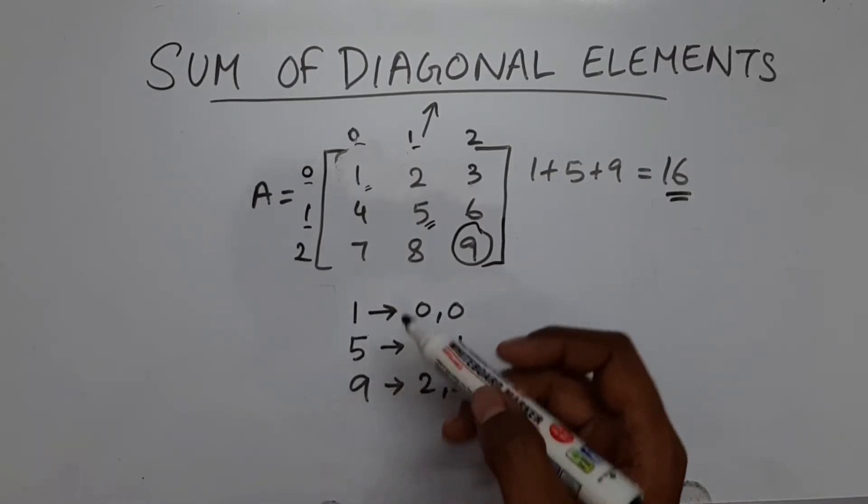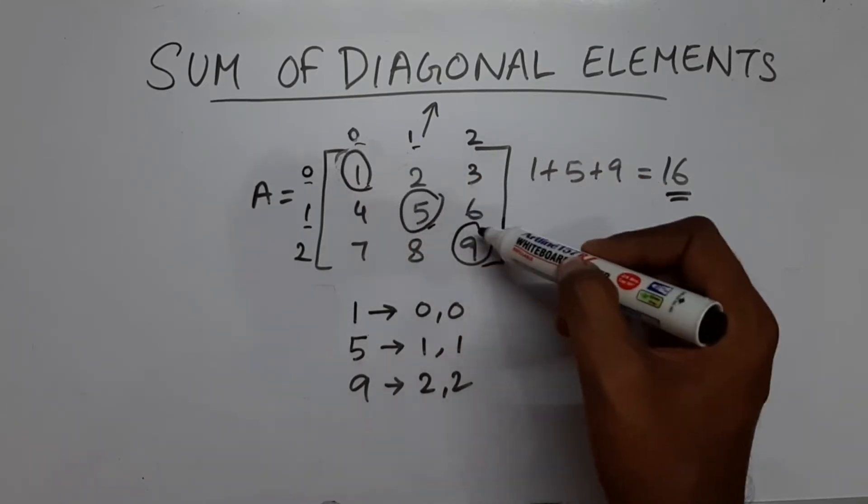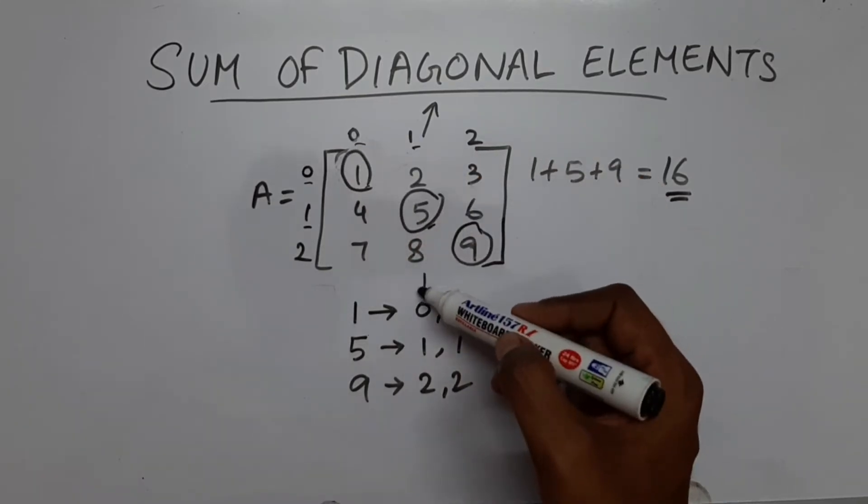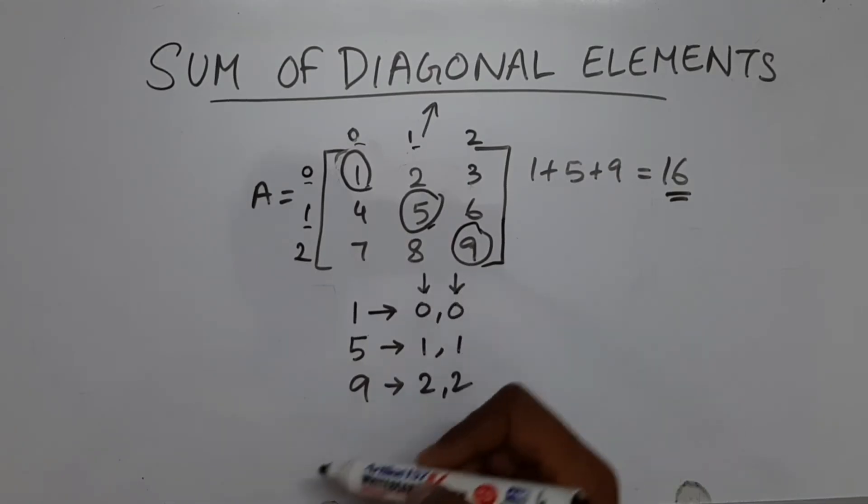So what is the common thing we observe here? For every element of the diagonal we can say that whatever is present in the row and the value present in the column is same.